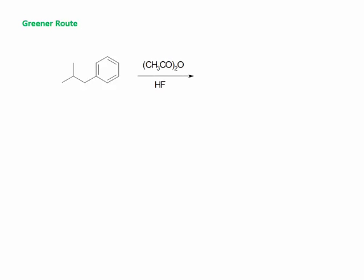Now we will see the greener route. In the greener route, isobutylbenzene is again used as the starting material. It is treated with acetic anhydride in the presence of HF as a catalyst, and the corresponding acyl group is introduced at the para position to the isobutyl group.